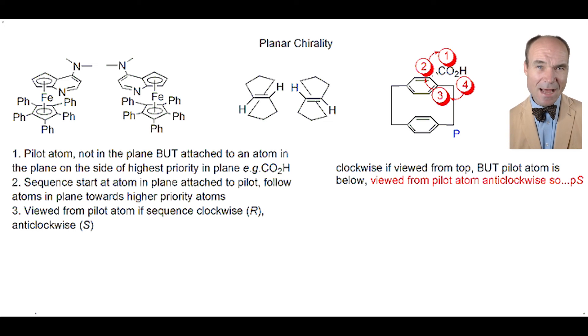So anticlockwise provides the descriptor S, sometimes described as PS with a small p indicating planar chirality.